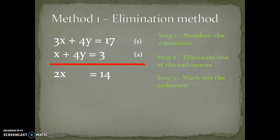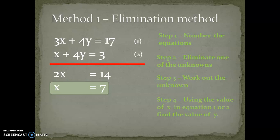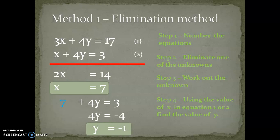Step 3: work out the unknown. As you can see, 2x equals 14, so x equals 7. Step 4: using the value of x in equation 1 or 2 to find the value of y, I've chosen the second equation. Substituting x equals 7 into the second equation gives y equals negative 1.